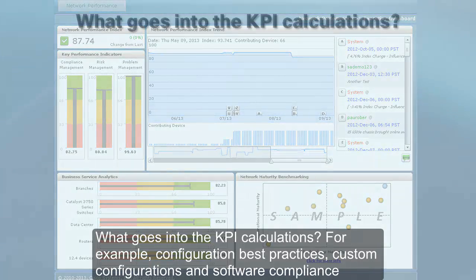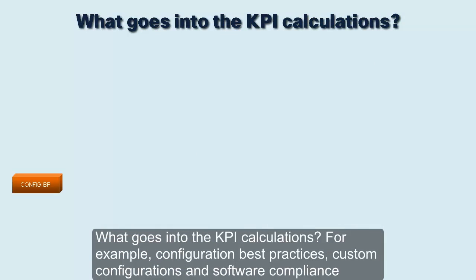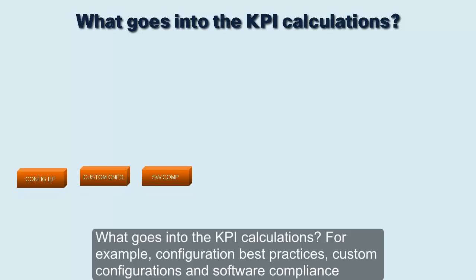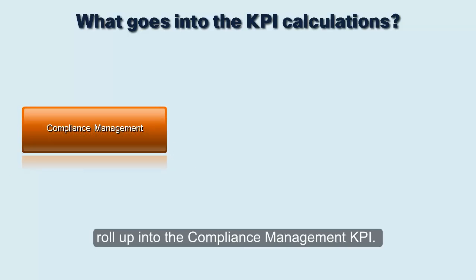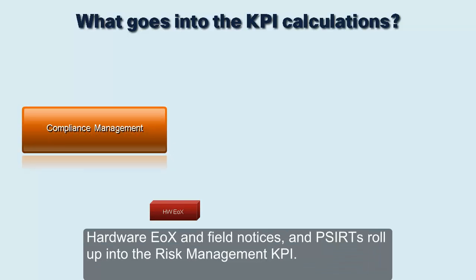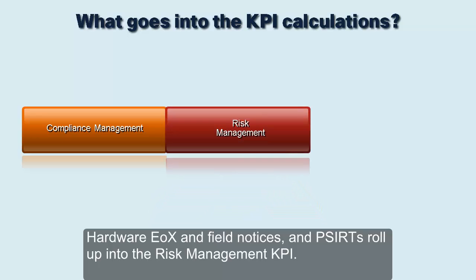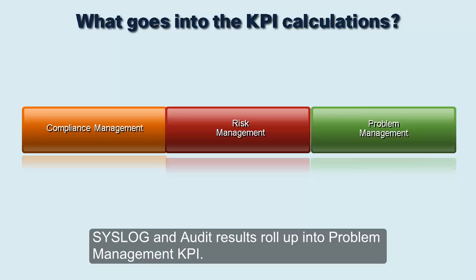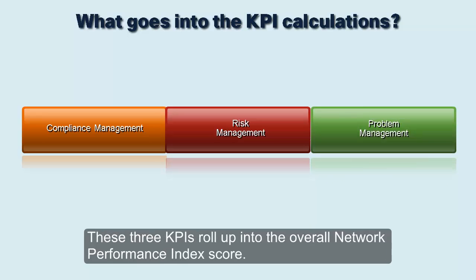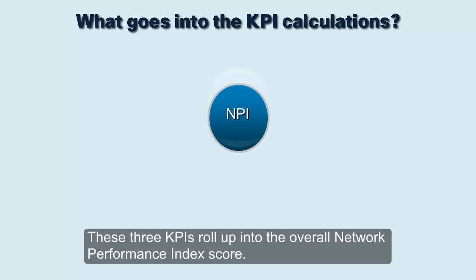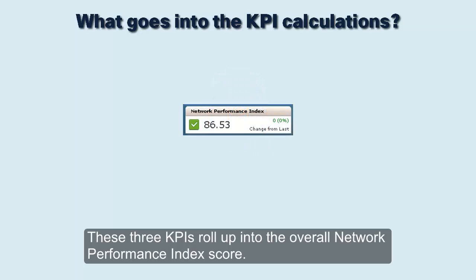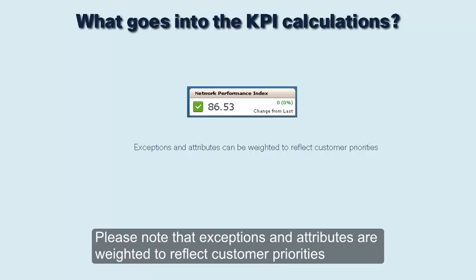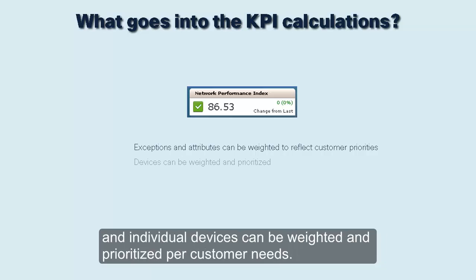What goes into the KPI calculations? Configuration best practices, custom configurations, and software compliance roll up into the compliance management KPI. Hardware EOX and field notices and p-certs roll up into the risk management KPI. Syslog and audit results roll up into the problem management KPI. These three KPIs roll up into the overall Network Performance Index score. Please note that exceptions and attributes are weighted to reflect customer priorities, and individual devices can be weighted and prioritized per customer needs.